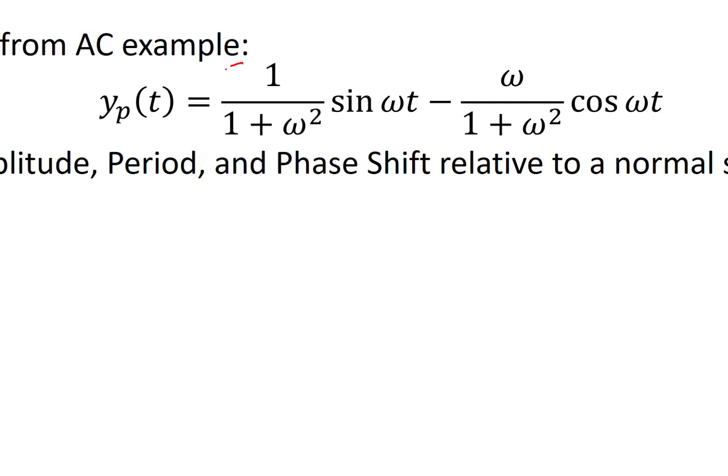To compare this with the formula on the previous slide, we note that the coefficient of sin(ωt), which we were calling little a, is going to be 1/(1+ω²), and the coefficient of cos(ωt), which we were calling b, is going to be -ω/(1+ω²).